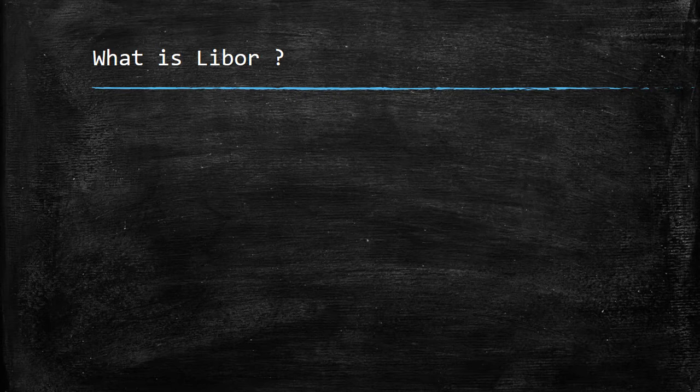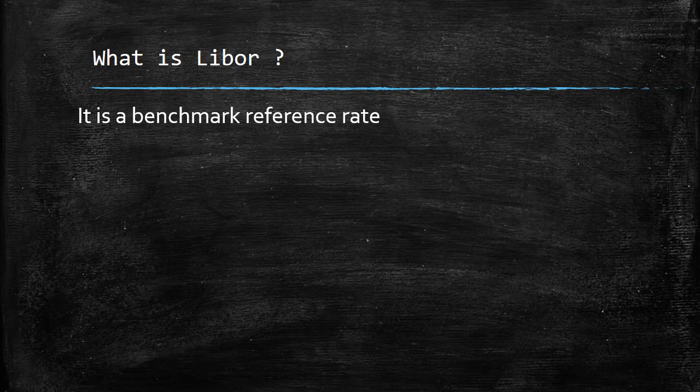First, let us understand what exactly LIBOR is. LIBOR is a benchmark reference rate — an index rate. Just like the Sensex indicates how stocks are performing in the stock exchange, this reference rate of LIBOR gives you an indication of how bank rates are moving. For example, if a bank has to give a loan to a corporate, it cannot just think of a rate out of thin air — it has to use a benchmark reference rate and then add or subtract a spread over that benchmark.